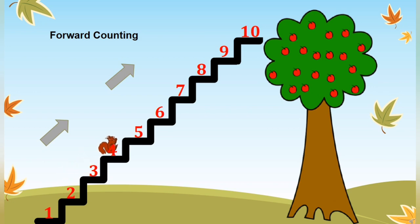What comes after 3? 4, then 5, 6, 7, 8, 9 and 10. And here, squirrel reaches to the apples.